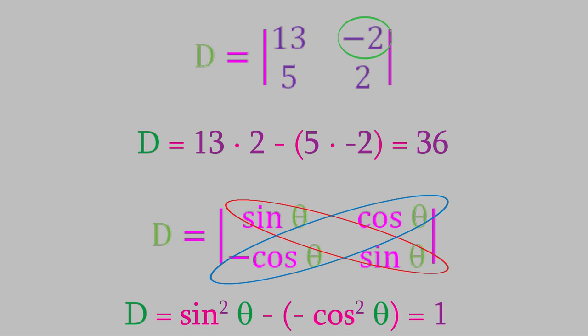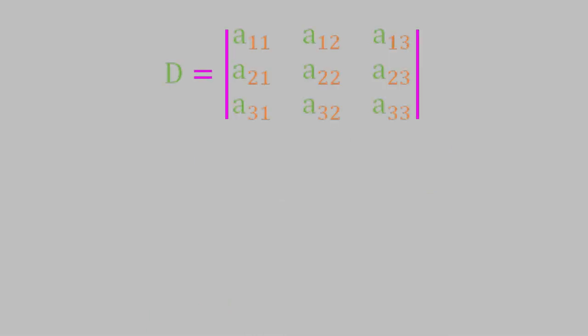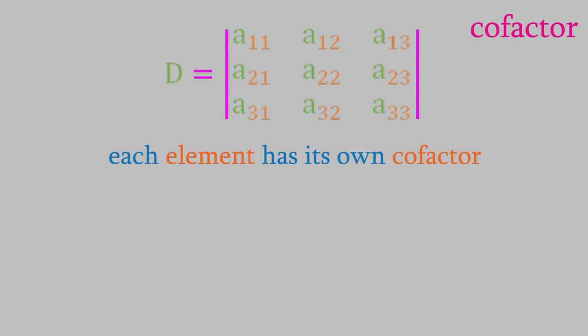Now let's look at larger determinants. Here's a 3 by 3 determinant. Determinants like this one and larger ones are more difficult to solve, but we can still do it. In order to solve them, we need to know about cofactors. Each element in a determinant has its own cofactor, which is given by a capital letter A. For example, the cofactor for this element has the symbol A23.